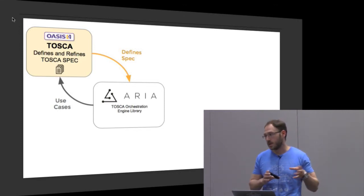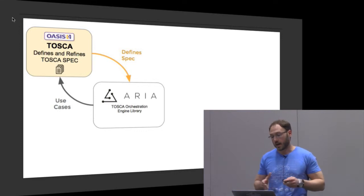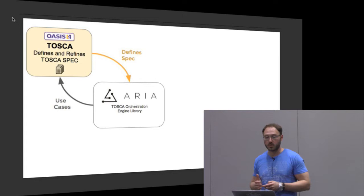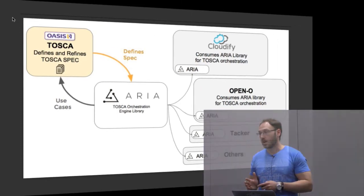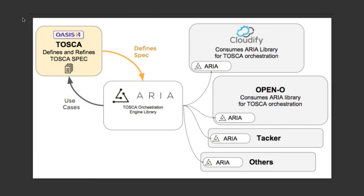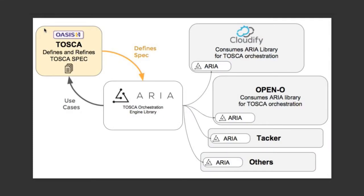Once these new notions and use cases are defined as part of the Tosca specification, ARIA implements them. Then all projects — Cloudify being one of them — consume the ARIA libraries. This allows the industry to have a shared set of libraries and a shared implementation of a specification, so essentially a single blueprint could be orchestrated by all these projects without requiring any translation or modifications.